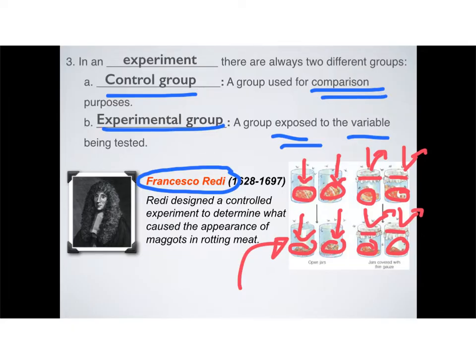He had an experimental group, which he actually modified something with by putting gauze over it. And he had a control group, which is just meat out in the open, as it was. That's an example of both control and experimental.